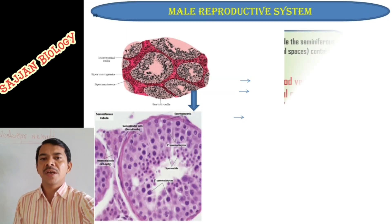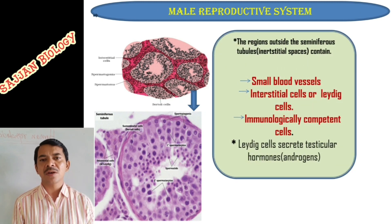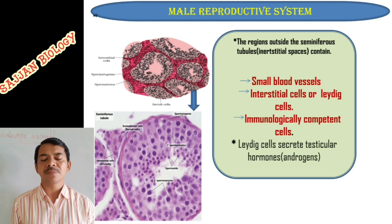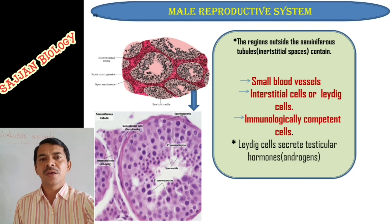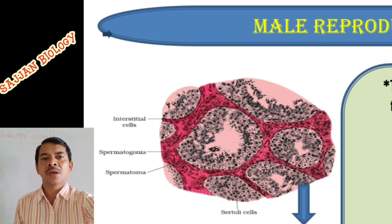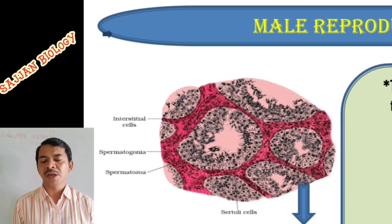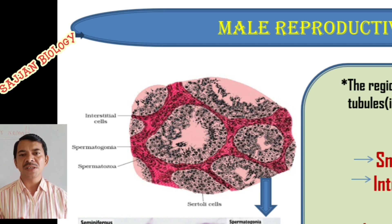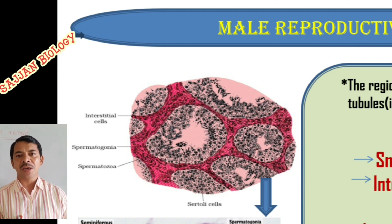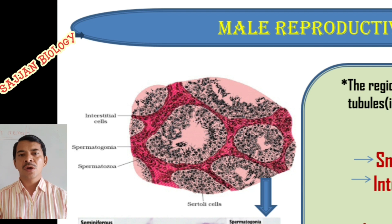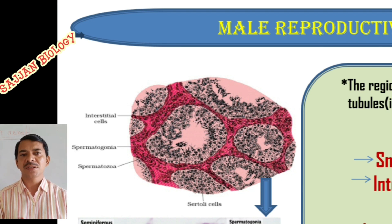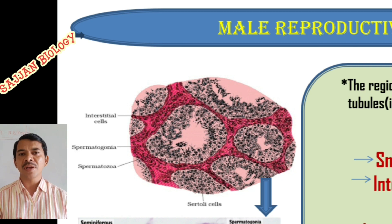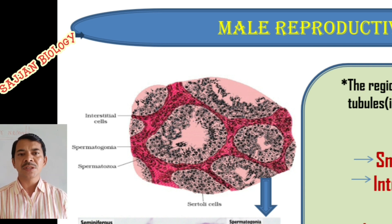Here we are studying the cross section of seminiferous tubules. When we take a transverse section of the testes we can see hundreds of seminiferous tubules. The image is magnified — you can see the diagram in your textbook. The transverse section of the testes shows hundreds of seminiferous tubules; in this magnified image you can see seven seminiferous tubules marked.